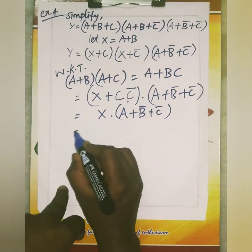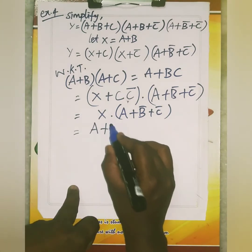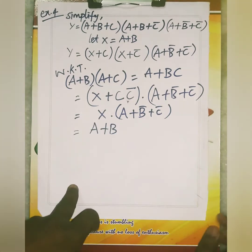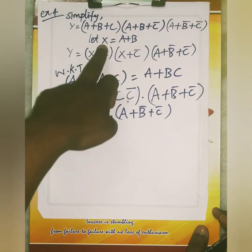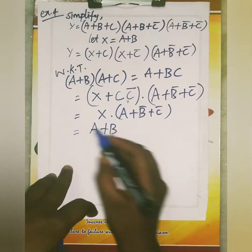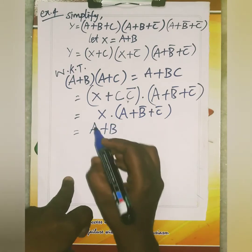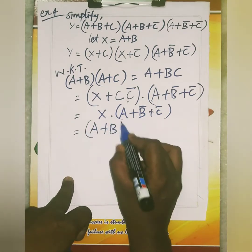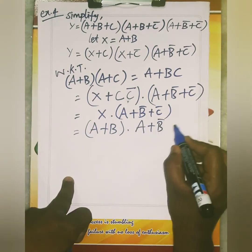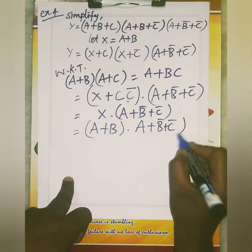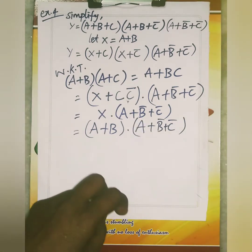Now substitute the value of X, which is A plus B. So we have A plus B, and A plus B complement, C complement.